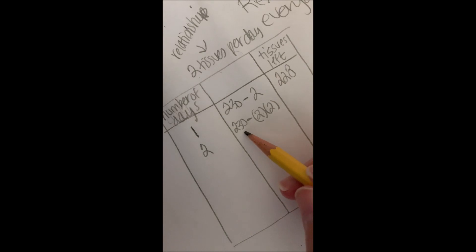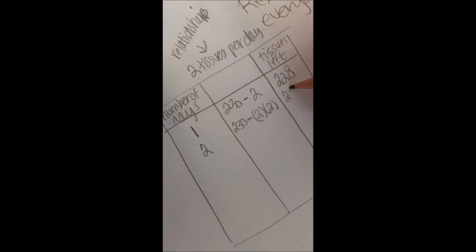So 230 minus two tissues per day and two days. So now we have 230 minus four. So 226.